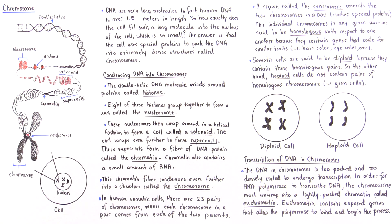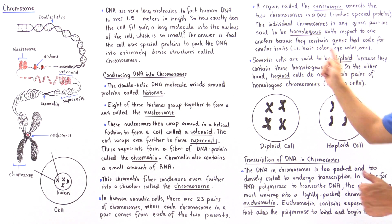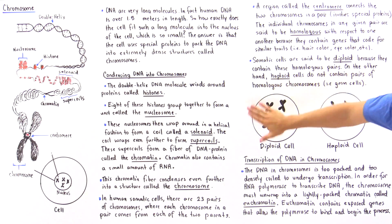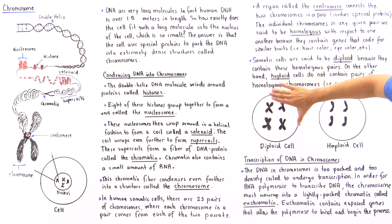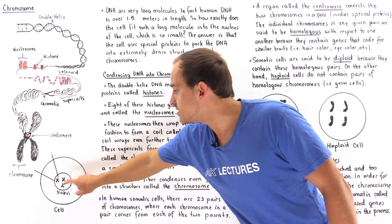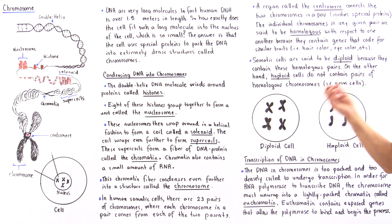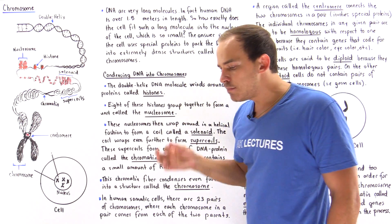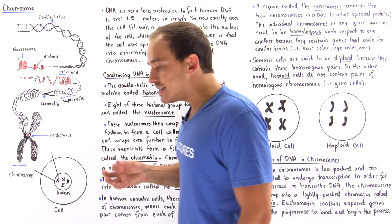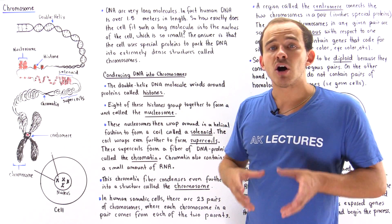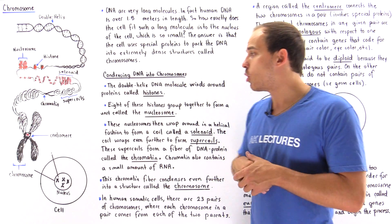Somatic cells are said to be diploid because they contain these homologous pairs. A diploid cell is a cell that contains our homologous pairs of chromosomes.